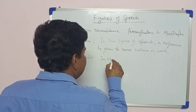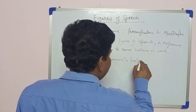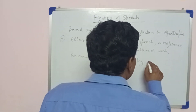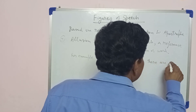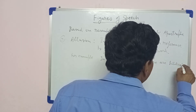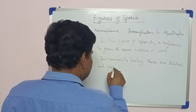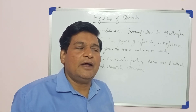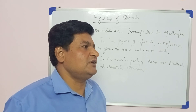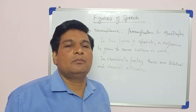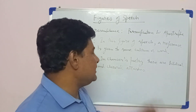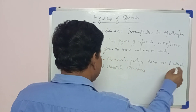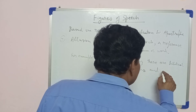For example, in Chaucer's poetry — Chaucer was a famous poet around the 15th century — there are biblical and classical allusions. Allusions means references. When you try to justify something by giving a reference to some classical or religious text, that is an allusion.